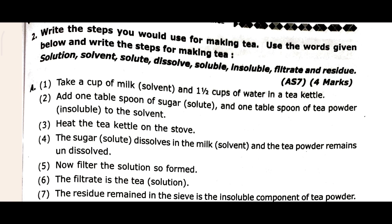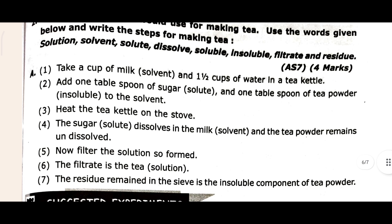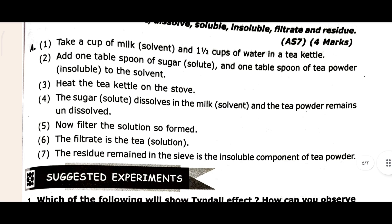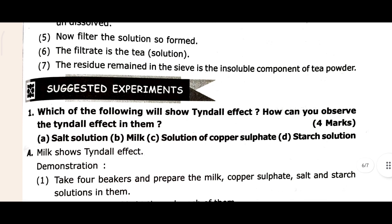The second higher order thinking question: 'Write the steps that would be used for making tea — use the words given below and write the steps for making tea.' So we have to write how to make tea. Take milk, put it on heat, when the milk is boiling, add tea powder, sugar, and whatever you want to mix. I know how to make tea but explaining it is a bit tricky!